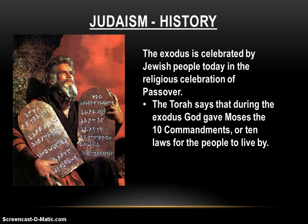The exodus is celebrated by the Jewish people today in the religious celebration of Passover. The Torah — the holy book of the Jewish faith — says that during the exodus, God gave to Moses 10 commandments, or laws for the people to live by. In actuality, there aren't just 10 — there are actually 613. It's just that Christians and other Westerners only accepted 10 of them. The commandments are not just religious rules, but also politically binding laws for the people to live by.